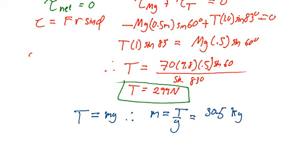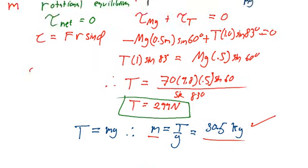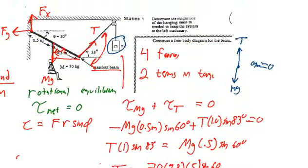So the hanging mass needs to have a size of 30.5 kilograms, so that this beam supporting the painter will remain in rotational equilibrium.